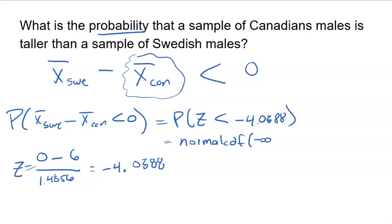I'm going to go to negative 4.0388 with a mean of zero, standard deviation of one. That's my generic normal standard deviation, mean and standard deviation. So now I'm going to go negative 99. We don't have a negative infinity on our calculator. It's negative 4.0388.